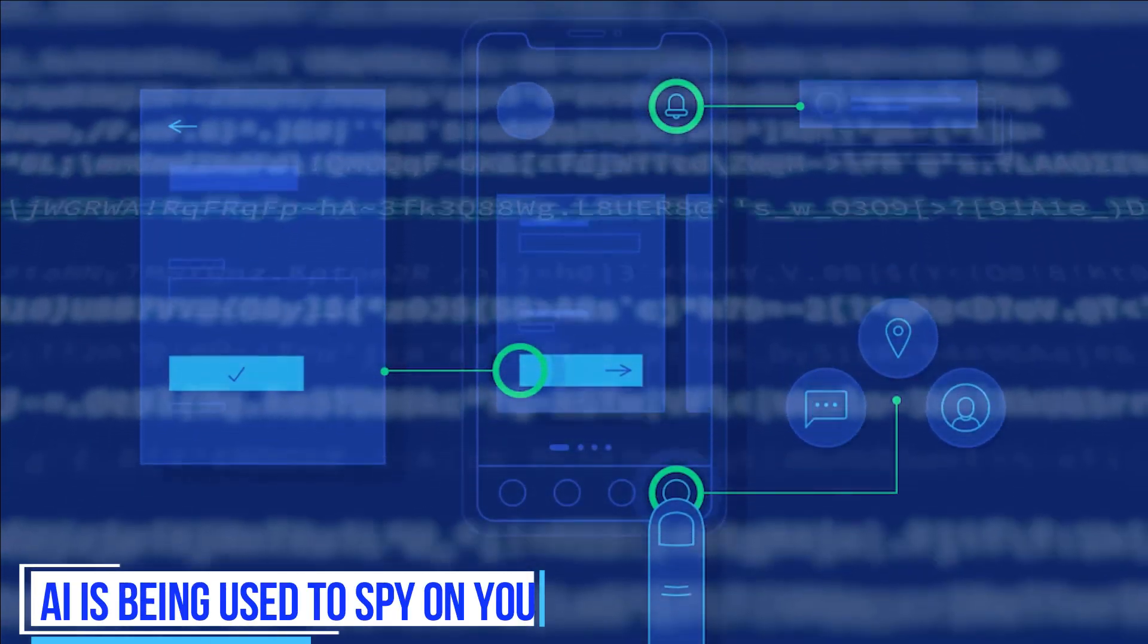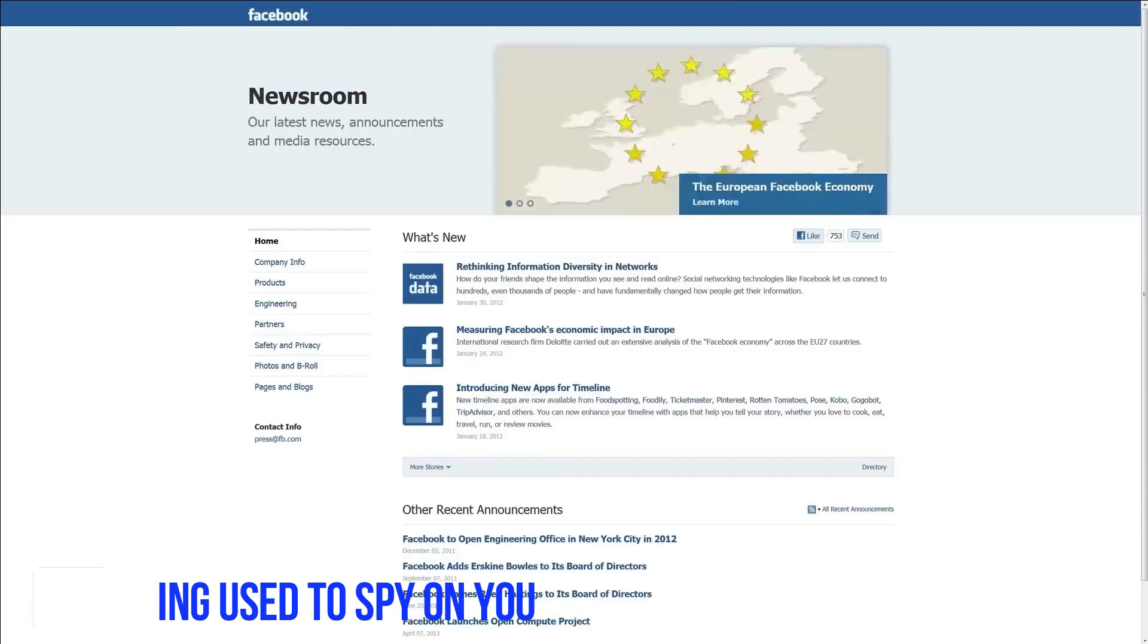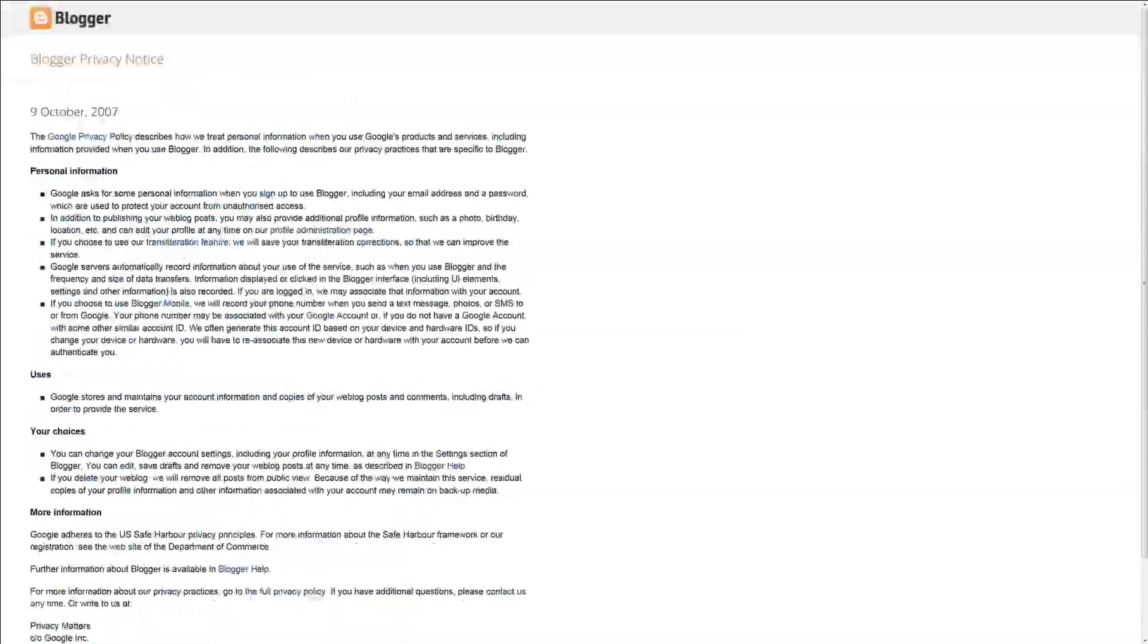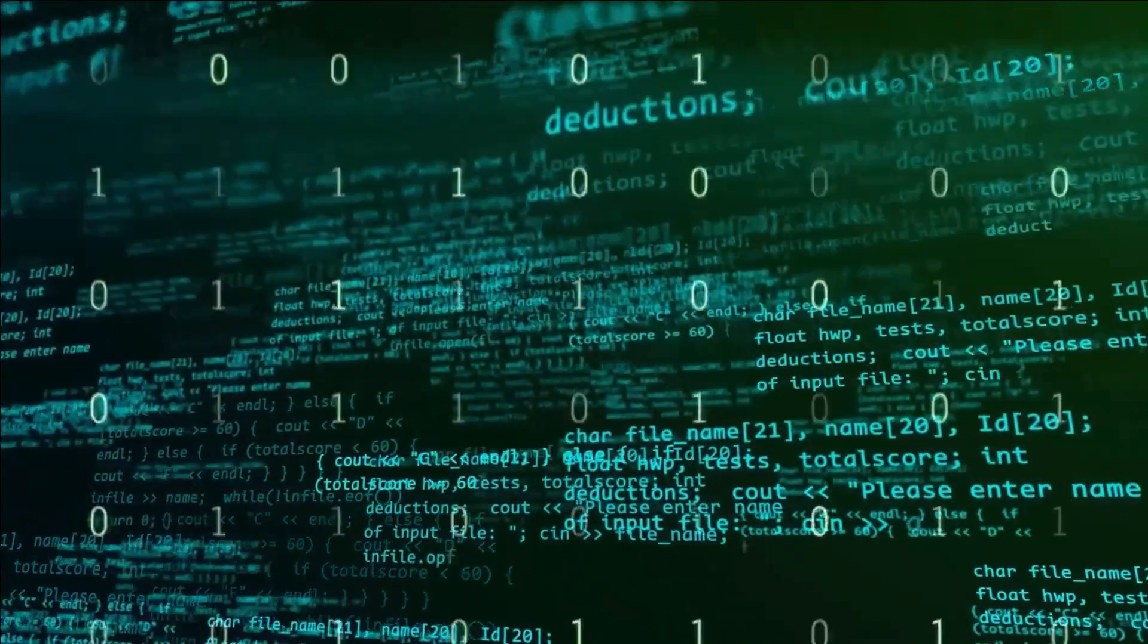Number 10. AI is being used to spy on you. With every click, search, and interaction, a digital trail is left behind. This trail constructs a detailed portrait of your identity, preferences, and can even anticipate your future actions. Imagine an unseen observer, but it's not a person. It's an algorithm.